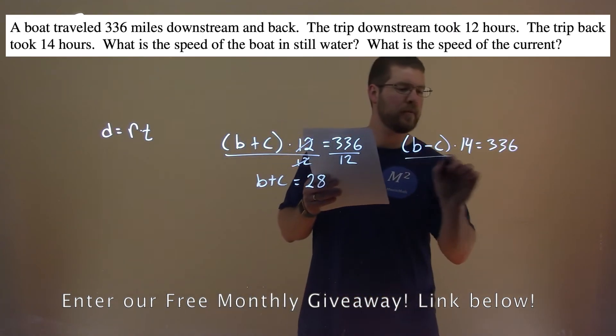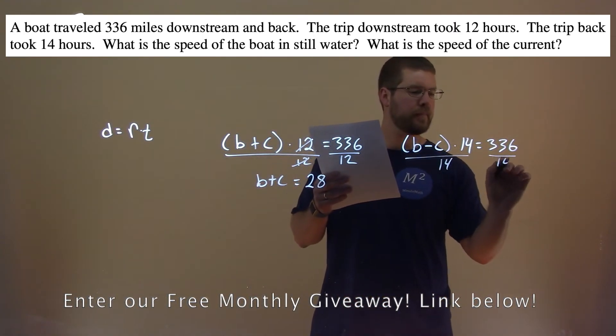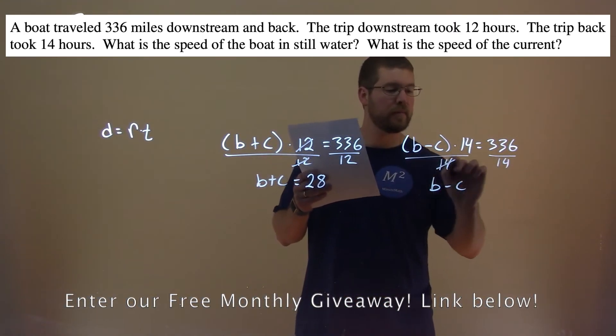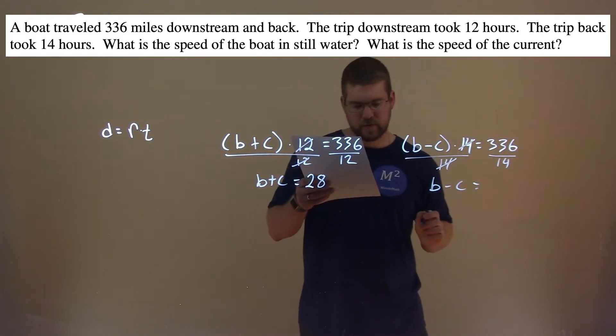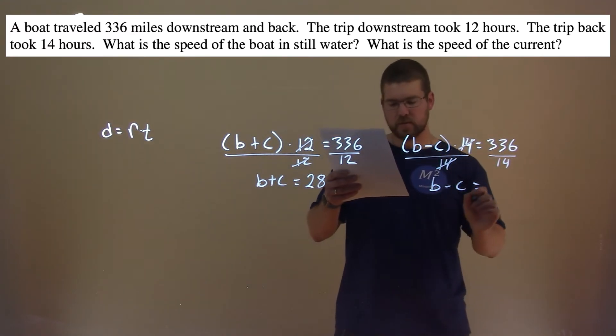I'm going to do the same thing here. Divide both sides by 14, and so now B minus C is 336 divided by 14, which is 24.